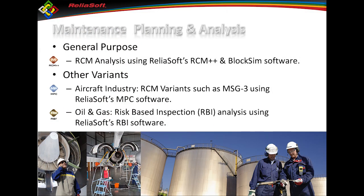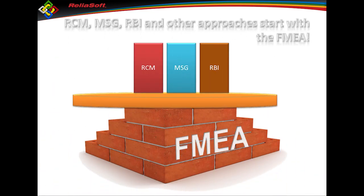Getting into maintenance planning and analysis, I can look at things like RCM-type analysis, MSG G3, and RBI — most of that is for the aircraft industry; RBI is more focused on oil and gas. At the end of the day, all of those methods require you to go through each component, understand the failure modes, put in causes and consequences/effects, and then add action items. So if I already have this information, how much more work do I have to do? A lot less. If I don't have it, I have to recreate all of it.